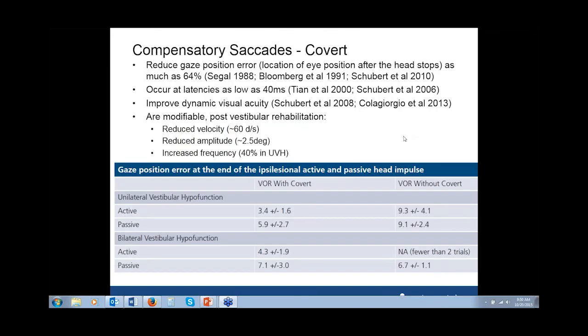Thank you, Wendy. We've studied the effect of vestibular rehabilitation on these saccades and have shown that they change as people improve. We believe that covert and overt saccades are markers for recovery of gaze stability and will help us predict or identify good recovery with rehabilitation. We've observed that their velocity changes by about 60 degrees per second overall, amplitude changes about 2.5 degrees, and they increase in frequency in people with unilateral vestibular hypofunction — meaning the brain is recruiting them more often.